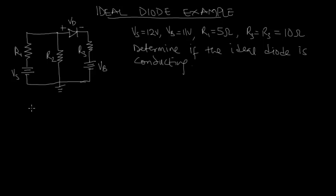And if the diode is not conducting therefore the diode acts as an open circuit. So let us consider that first. First, assume the diode is not conducting.